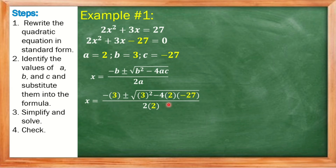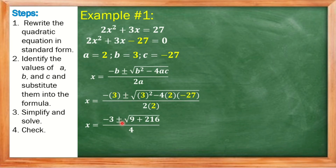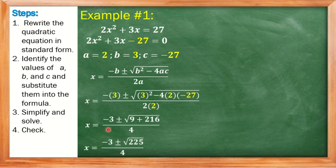Now let's simplify. Negative times positive 3 gives negative 3. Copy the plus or minus and the square root. Then 3 squared equals 9. Negative 4 times 2 is negative 8, and negative 8 times negative 27 is positive 216. Then 2 times 2 is 4. Continuing to simplify: we have negative 3, plus or minus the square root of 9 plus 216, which equals 225, all over 4.